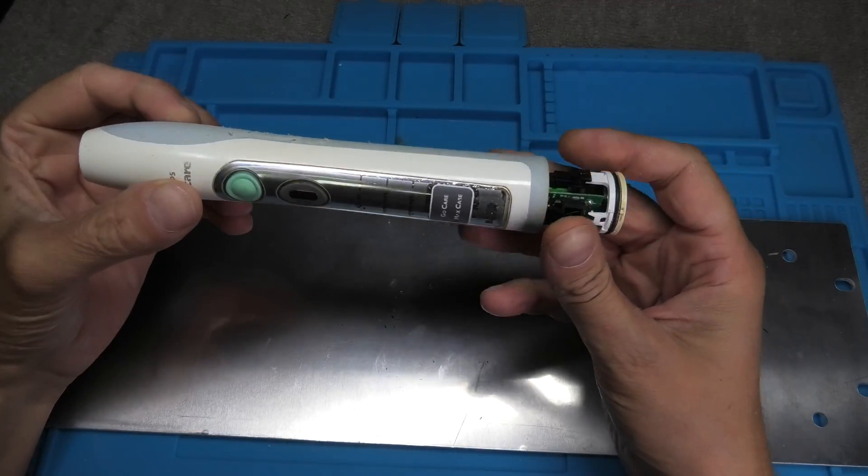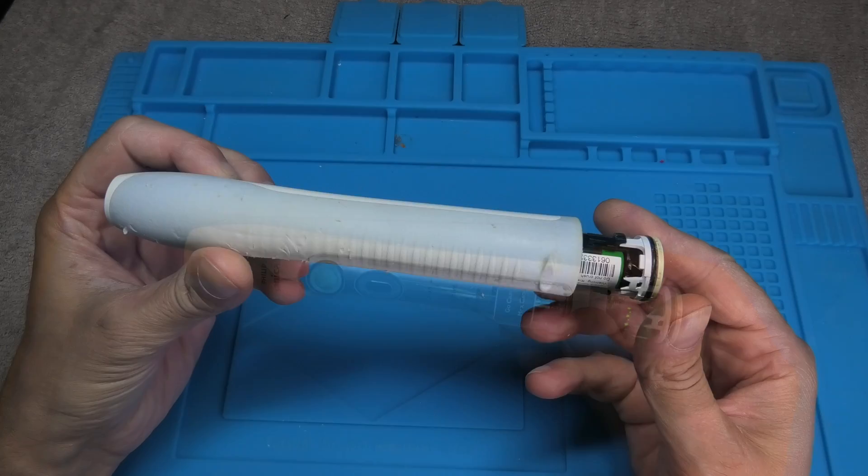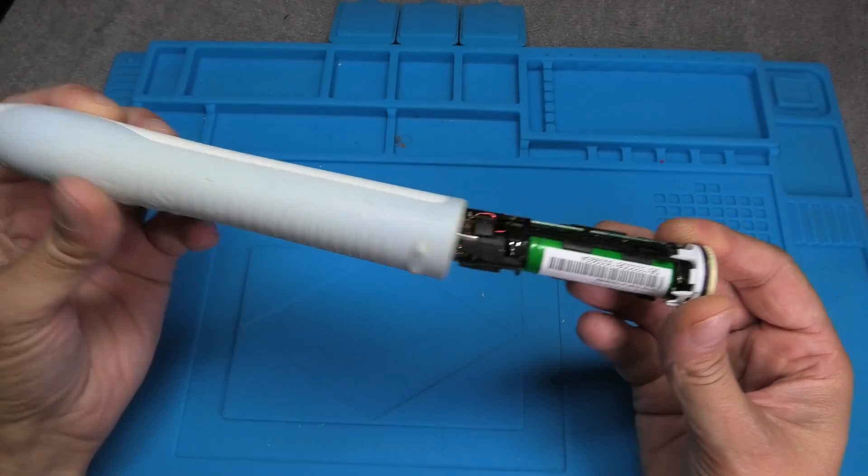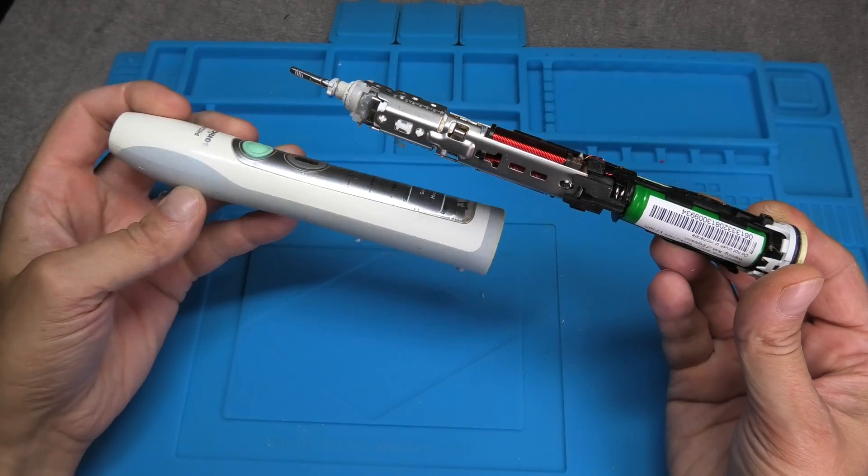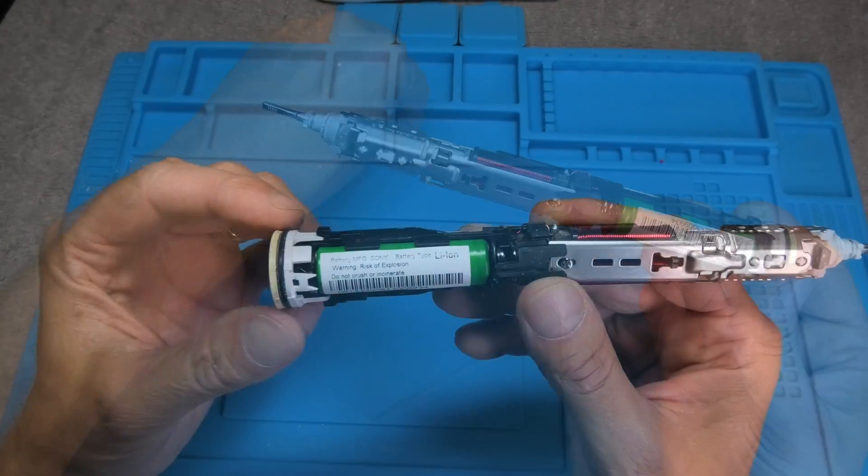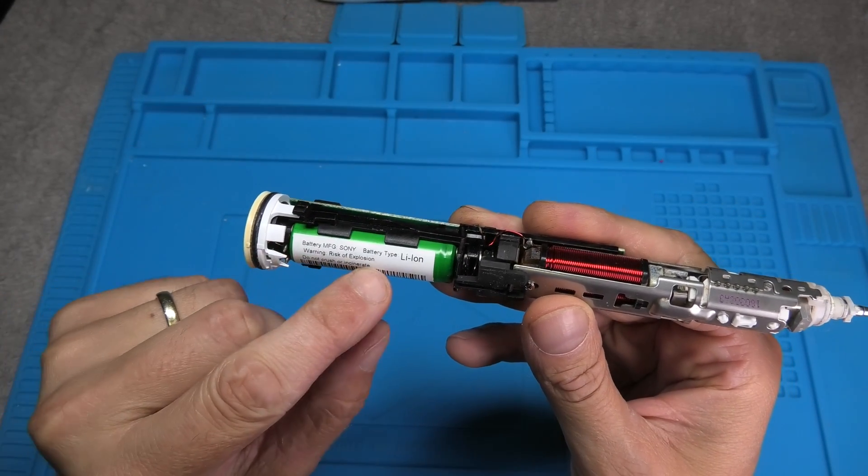If this doesn't help, then you just use a couple of swings against the surface and then eventually the toothbrush will open up at the bottom end.